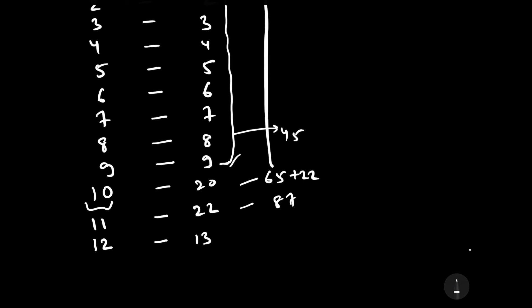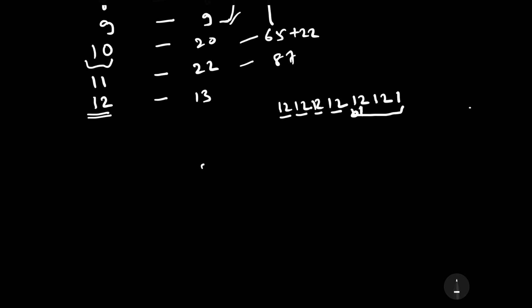To find the last 4 digits, we write 12 repeated 13 times: 1 2 1 2 1 2 1 2 — that is 2 times, 4 times, 6 times, 8 times, 10 times, 12 times, and 13 times. So the last 4 digits are 2 1 2 1. If 2121 is divisible by 16 then the remainder is 0; otherwise, whatever the remainder of 2121 divided by 16 is, that is the remainder of the whole number.